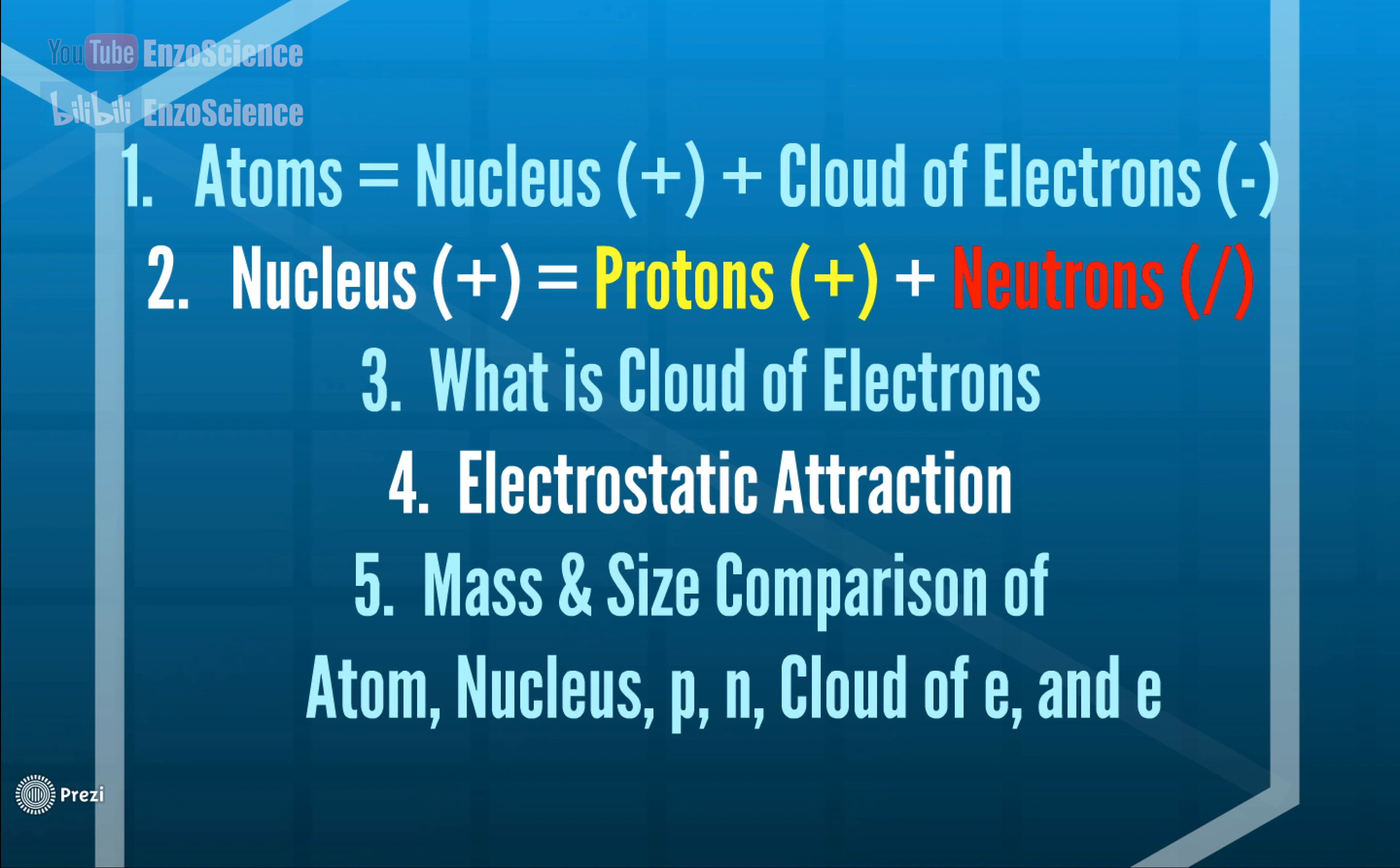Next, we learned that electrostatic attraction exists between positively and negatively charged particles, for example electrons and nucleus. The last point is mass and size comparison of these particles. I need you guys to remember 10 grand to 100 grand times and 1800 times. If you forget the above details, then I strongly recommend reviewing my last video.